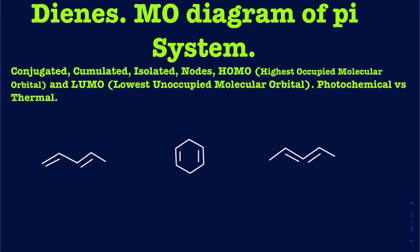Hello everyone. In this video I'm going to be talking about the dienes and different types of dienes — conjugated, accumulated, and isolated. I'm also going to talk about the MO diagrams for conjugated dienes, which will bring in the nodes, the HOMO (highest occupied molecular orbital), and LUMO (lowest unoccupied molecular orbital). I'll briefly mention the difference between photochemical versus thermal reactions and how your HOMO and LUMO change. Before we get to those complicated topics, let's talk about the types of dienes.